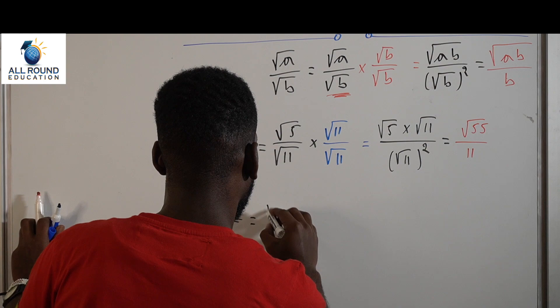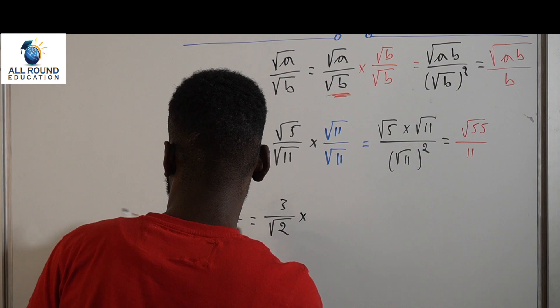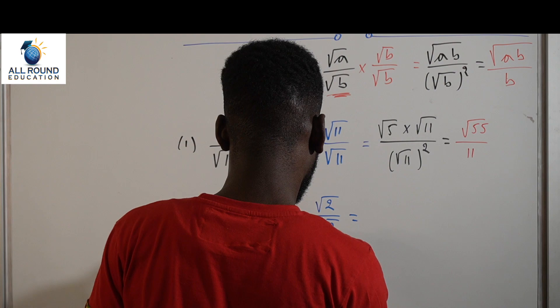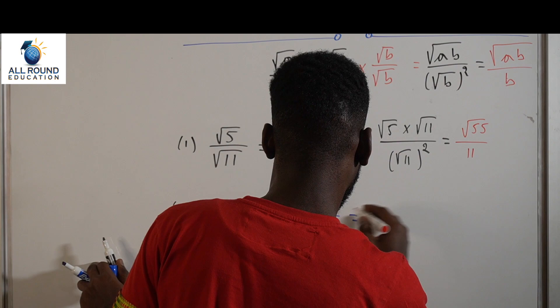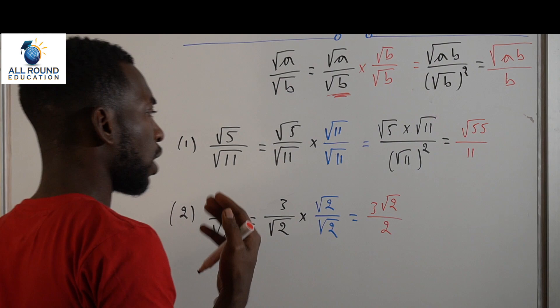The next question is 3 over root 2. Same property. We have 3 over root 2 times by root 2 over root 2, which gives us root 6 at the top. Our final answer will be 3 root 2 over 2.